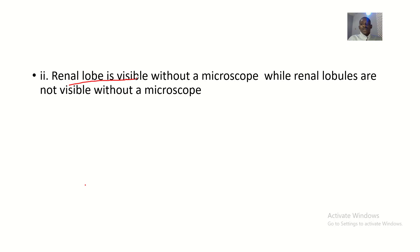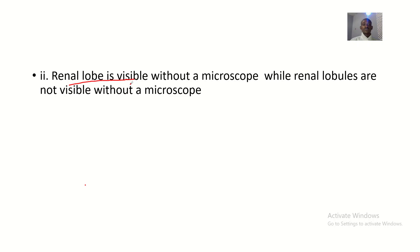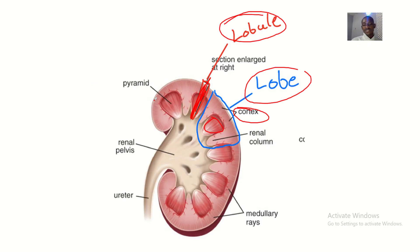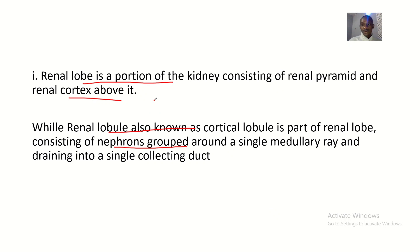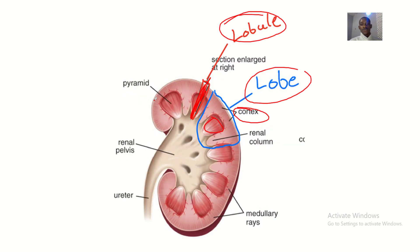Lastly, the renal lobe is large and can be visible without a microscope, while the renal lobule is just part of the renal lobe, is smaller, and cannot be seen without a microscope. That's the two key differences between the renal lobe and the renal lobule. See you guys in the next one — bye!